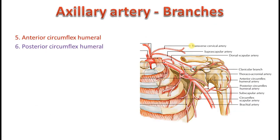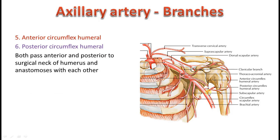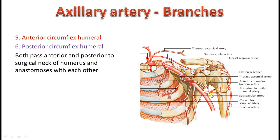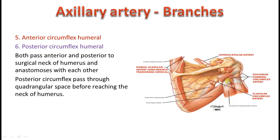The last two branches of the axillary artery are the anterior circumflex humeral artery and the posterior circumflex humeral artery — called circumflex humeral because they wind around the surgical neck of the humerus. The anterior circumflex winds from the front and gives an ascending branch which passes through the intertubercular sulcus. The posterior circumflex humeral artery passes behind through the quadrangular space along with the axillary nerve, and gives a descending branch, also taking part in the anastomosis around the scapula.